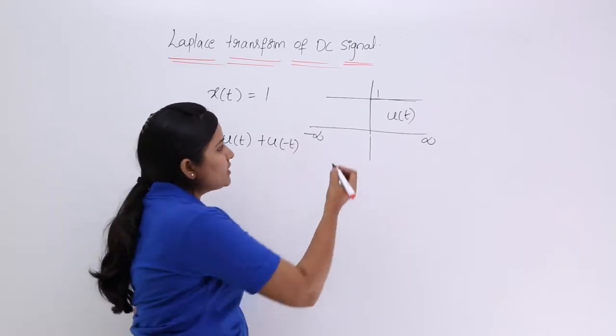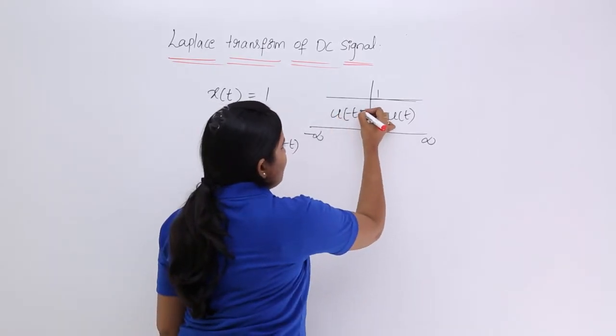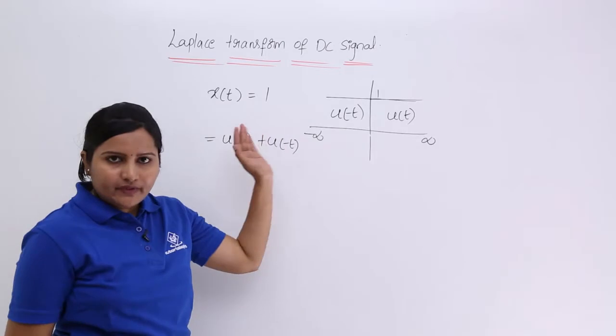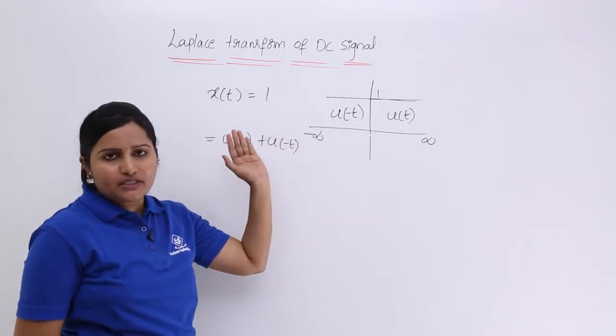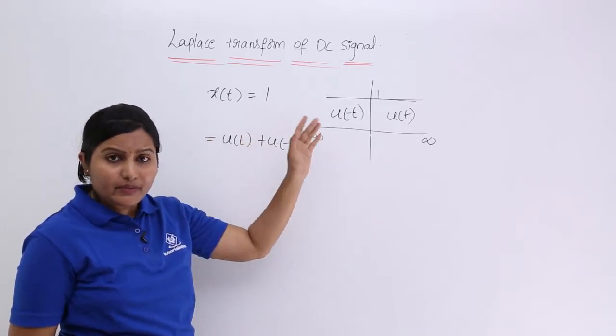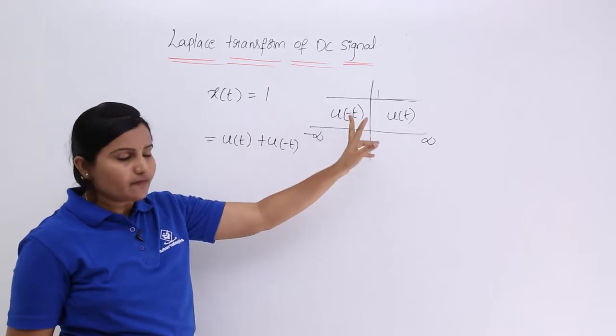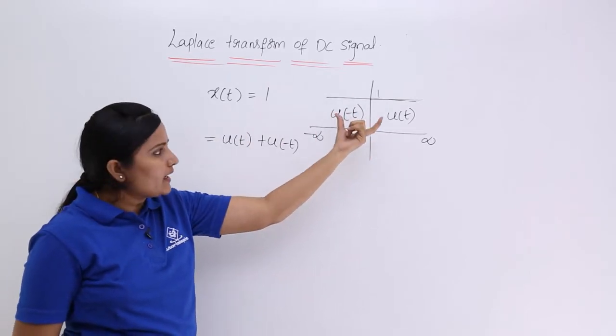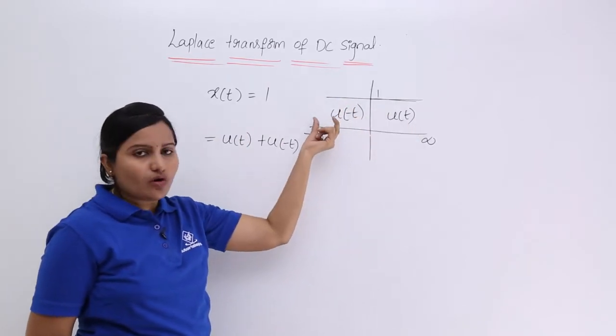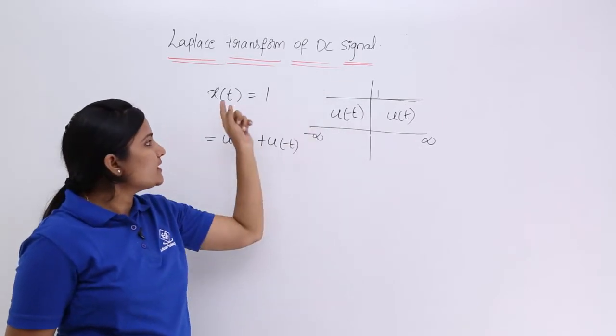And from 0 to minus infinity we can say this function is shifted or reversed unit step function, that means time reversal unit step function u of minus T. By combining u of T plus u of minus T you are going to get your DC signal.